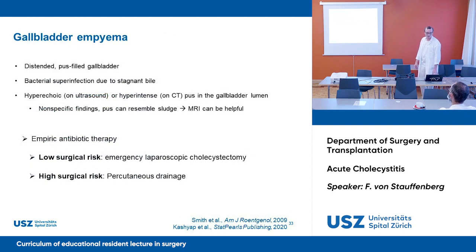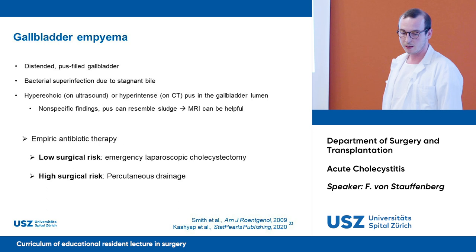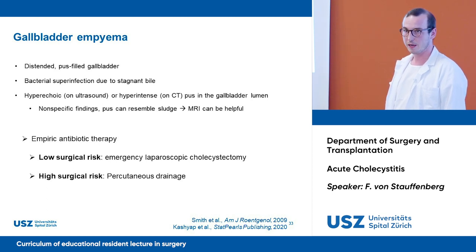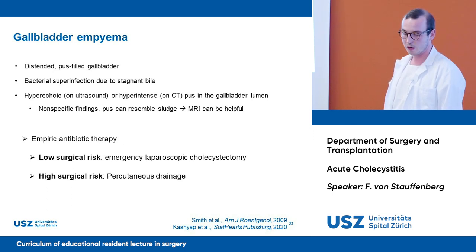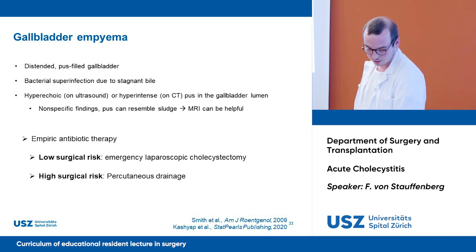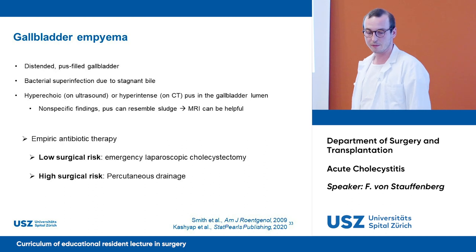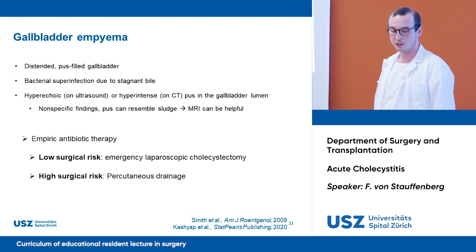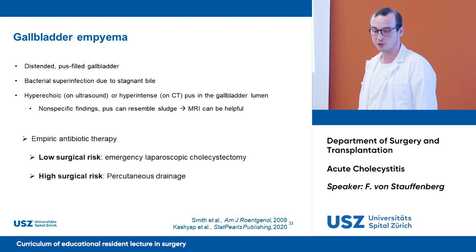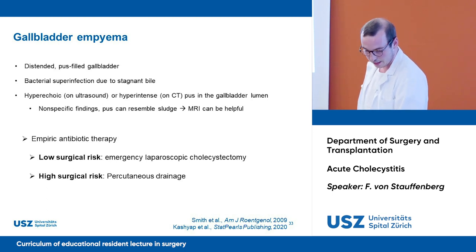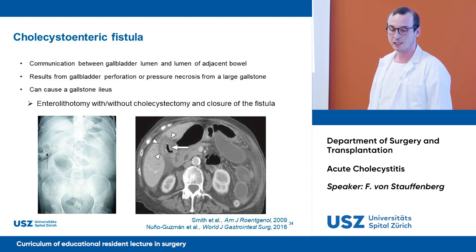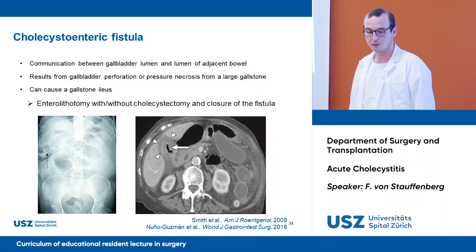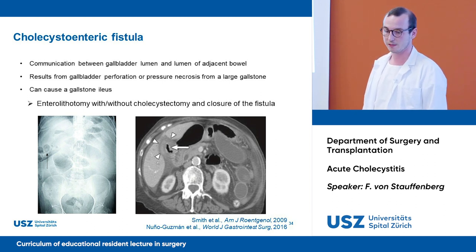Gallbladder empyema is defined as a distended pus-filled gallbladder due to bacterial superinfection from stagnant bile. Imaging findings on sonography and CT are nonspecific, as the pus can resemble sludge, so MRI can be helpful to state the diagnosis. Empiric antibiotic therapy followed by emergency laparoscopic cholecystectomy or percutaneous drainage is the treatment of choice. A special case is the development of a cholecystoenteric fistula, where there is a communication between the gallbladder lumen and adjacent bowel due to gallbladder perforation or pressure necrosis from large gallstones.